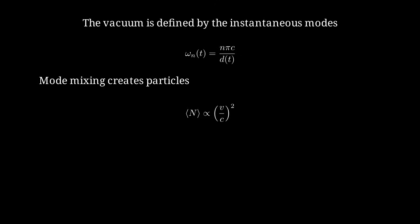The number of photons created is proportional to v squared over c squared, where v is the mirror velocity and c is the speed of light. This is why you need relativistic speeds or extremely high-frequency oscillations to get a measurable effect.